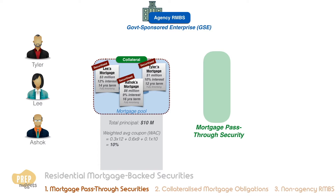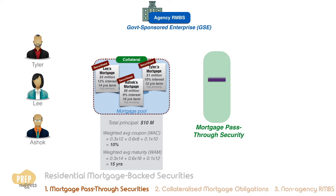Likewise, we use the same method to find the weighted average maturity of the pool, which is 15 years. Based on these figures, our mortgage pass-through security has a total principal of $10 million, the coupon rate it receives is 10%, and has a weighted average maturity of 15 years.